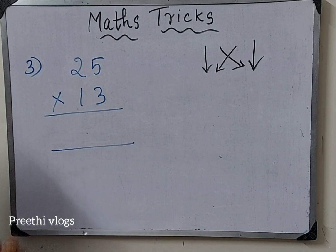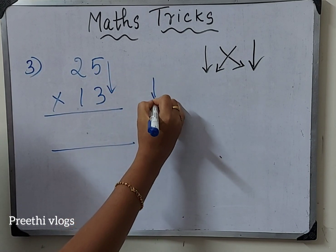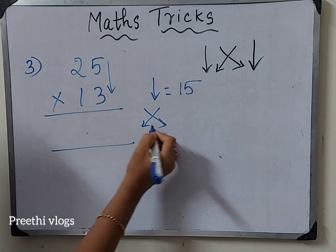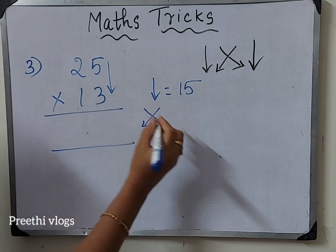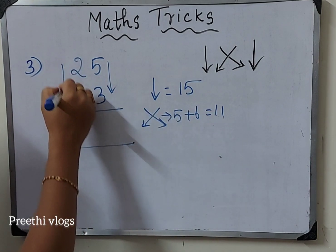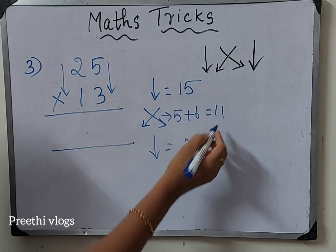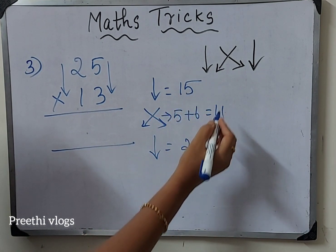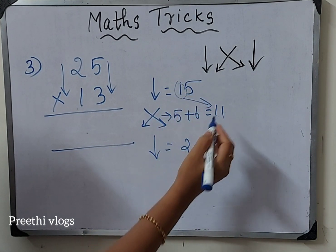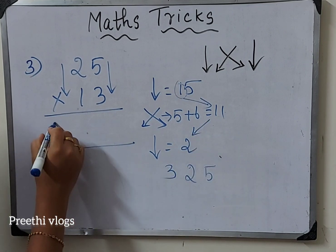This is how easy you can use these simple tricks. Now, the sum is 25 into 13. Down arrow mark is 5, 3, that's 15. Cross arrow mark is 6 plus 5 equal to 11. Down arrow mark is 2 into 1 equal to 2. First 5 is 5, balance is 1. Next 11 plus 1 is 12, and 1 carryover: 325.